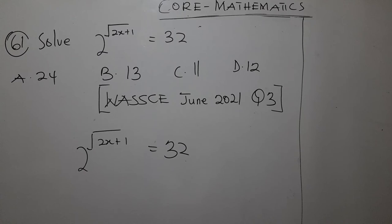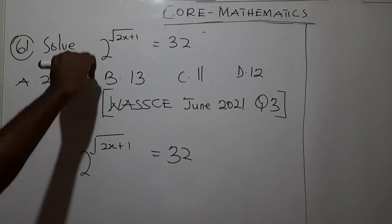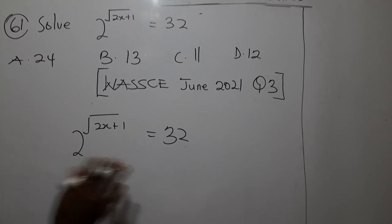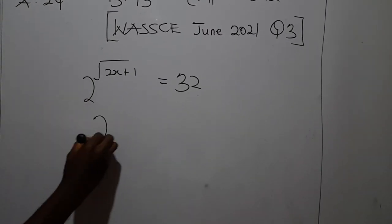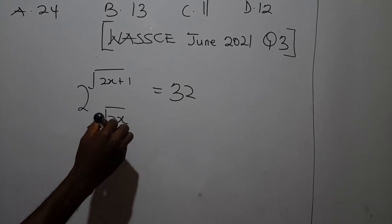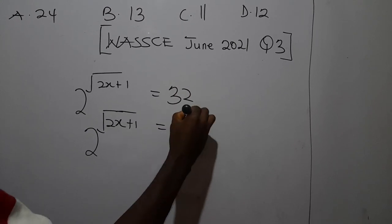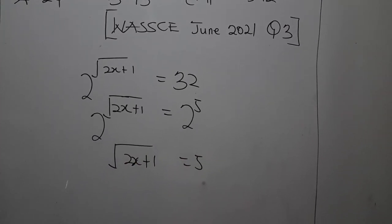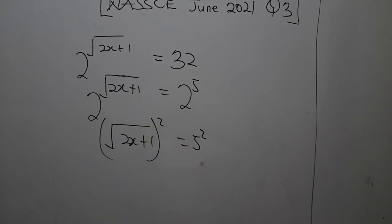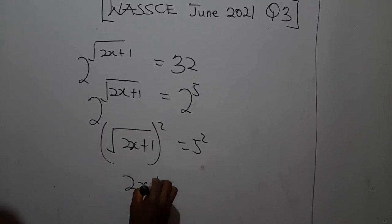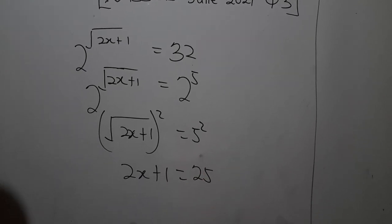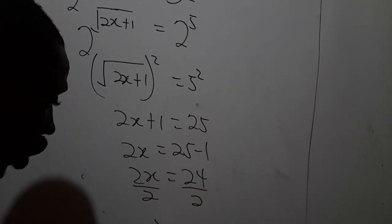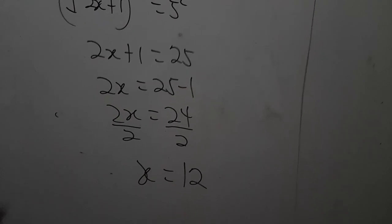WASSCE June 2021, objective question number 3: solve 2^(√(2x+1)) = 32. Since 32 = 2^5, the bases are the same so √(2x+1) = 5. Squaring both sides: 2x + 1 = 25, so 2x = 24, giving x = 12. The correct answer is D.